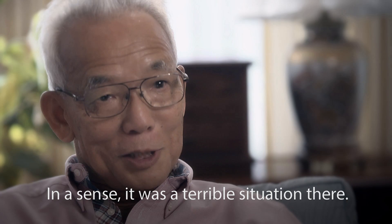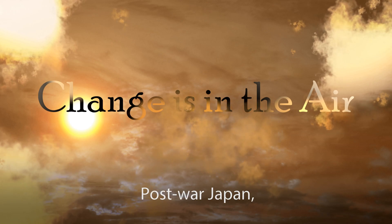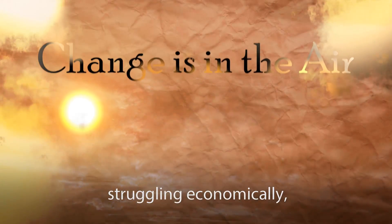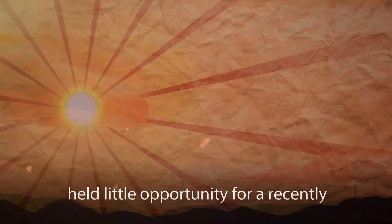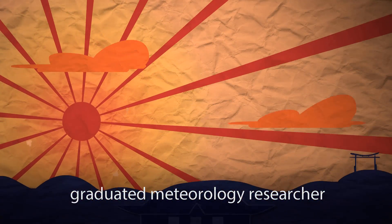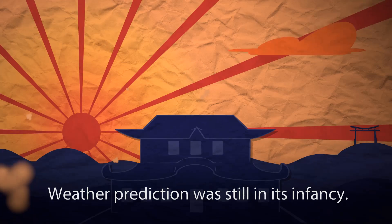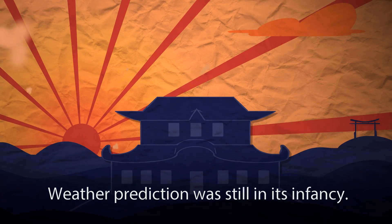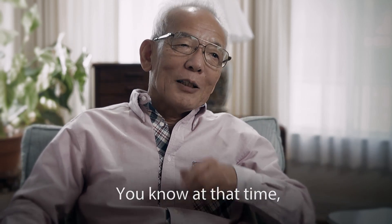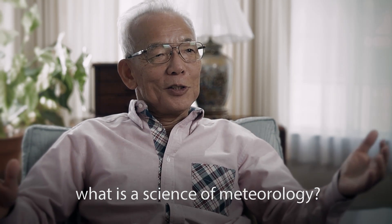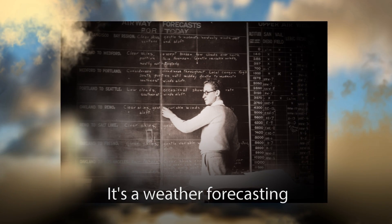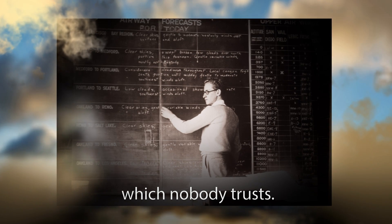In a sense, it was a terrible situation there. Post-war Japan, struggling economically, held little opportunity for a recently graduated meteorology researcher from the University of Tokyo. Weather prediction was still in its infancy. At that time, what is the science of meteorology? It's weather forecasting, which nobody trusts.